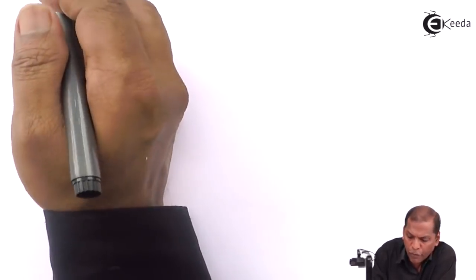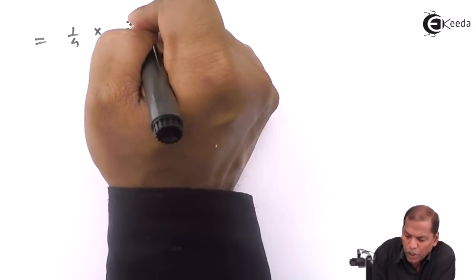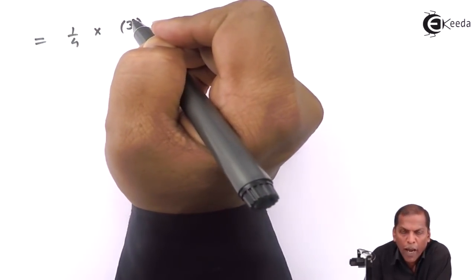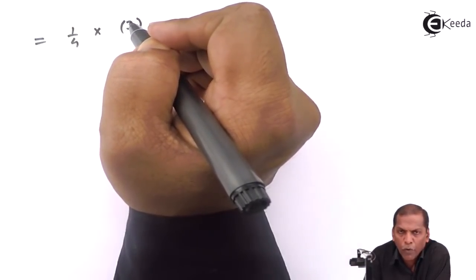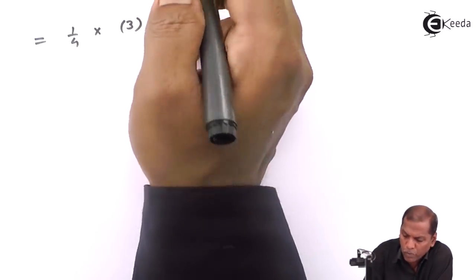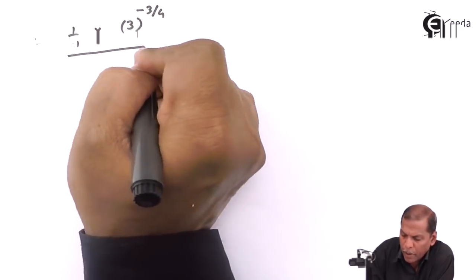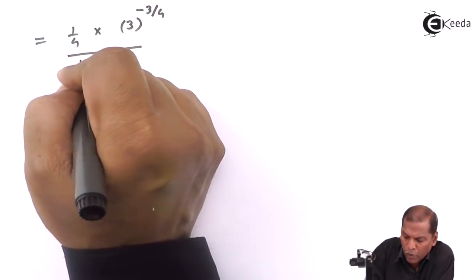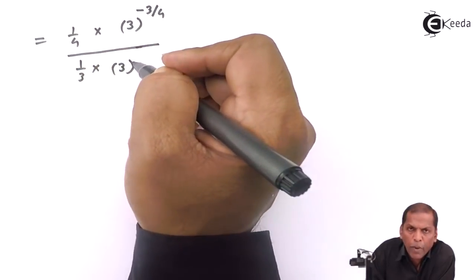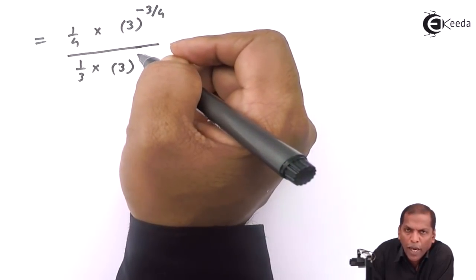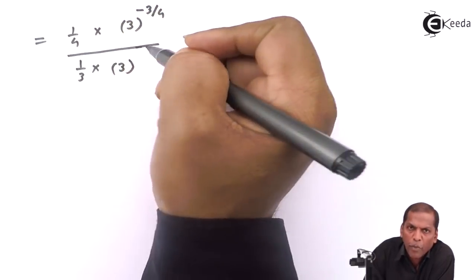The next step: in the numerator we have 1/4 into 3 raised (1/4 minus 1). Cross multiplying gives 1 minus 4 upon 4, that is minus 3/4. In the denominator we have 1/3 into 3 raised (1/3 minus 1), which gives us 1 minus 3 upon 3, that is minus 2/3.